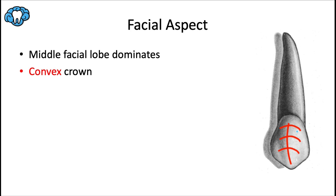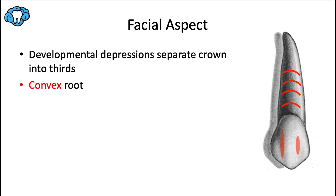The middle facial developmental lobe dominates the crown, making for a very convex facial surface. This is useful anatomically because it sits at the corners of the mouth and turns the corner of the dental arches leading into the posterior teeth. The facial ridge should dominate your view in a conversational smile. The crown has two developmental depressions separating it into thirds — the crown develops from three facial lobes and one lingual lobe. The distal depression is a bit more visible and deeper than the mesial one, and the root is also fairly convex from the facial aspect.